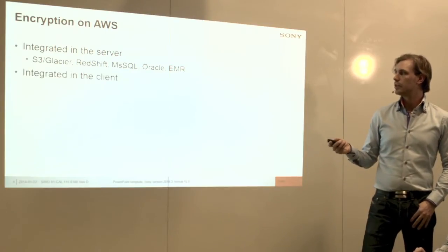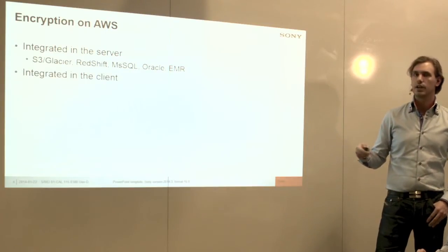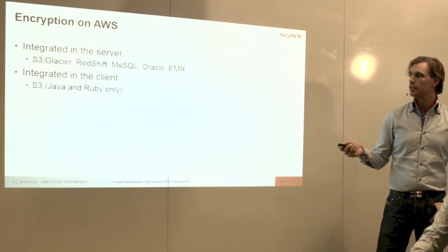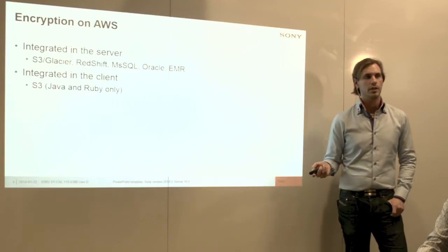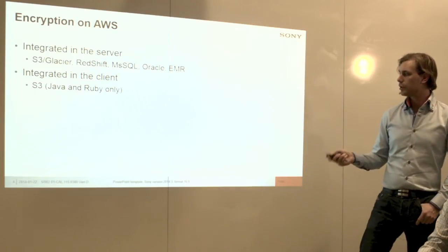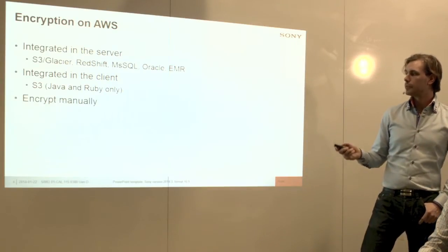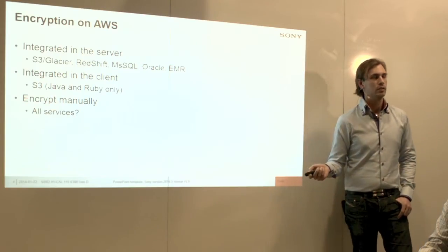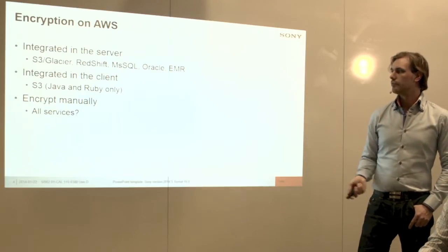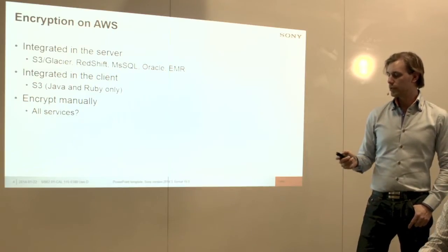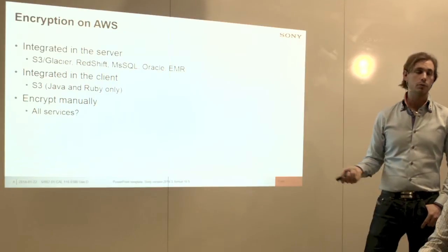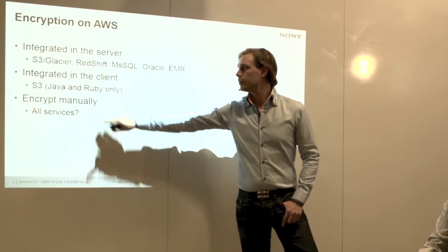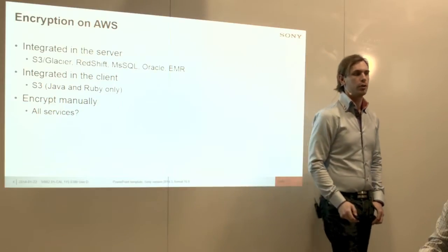You can also have client-integrated encryption, which is only available on Amazon S3 in the Java and Ruby implementations. Or we can encrypt everything ourselves, which means we can encrypt more or less anything we store on any service. If you manually encrypt it, you can encrypt it and store it anywhere. This is what I'm going to talk about, because that's where we have to handle our own encryption keys.